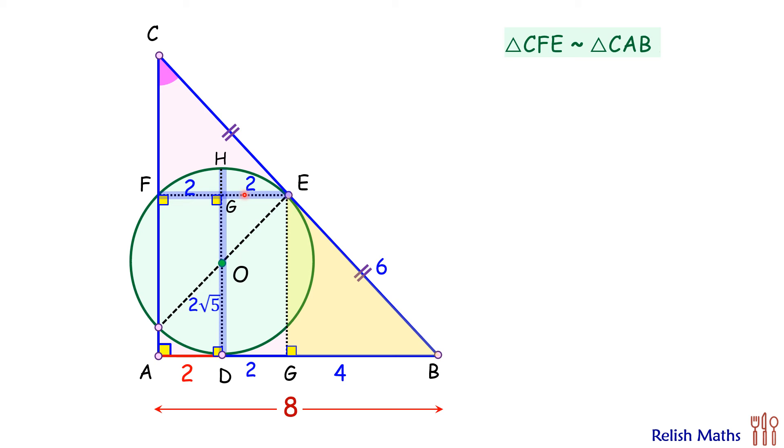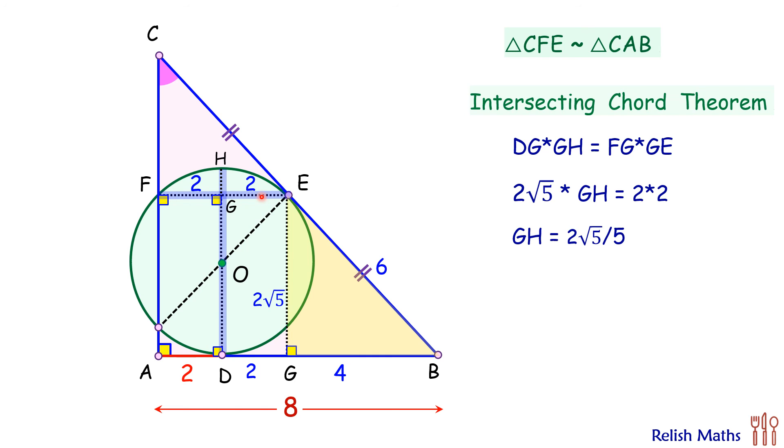Applying power of point or intersecting chord theorem, we get DG times GH is FG times GE. Putting the values, this is 2√5 times GH is 2 times 2. Solving it will get value of GH as 2√5/5.